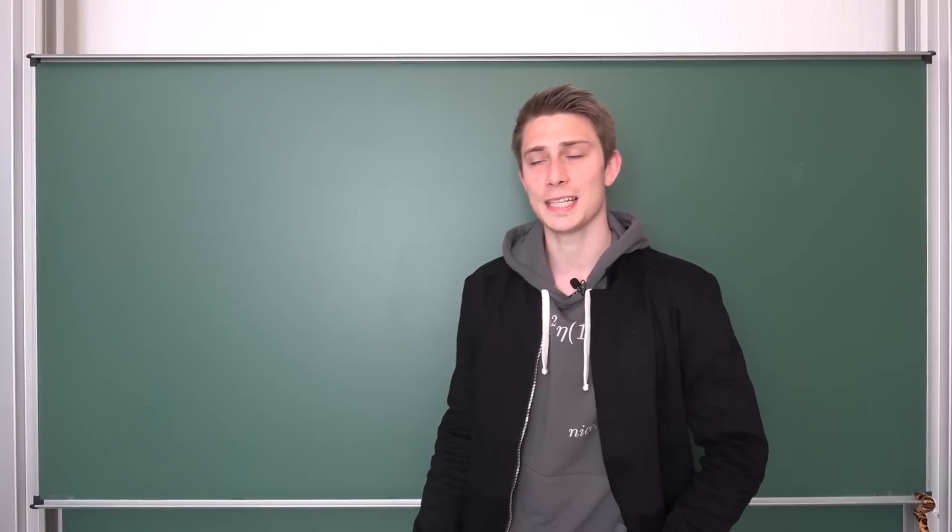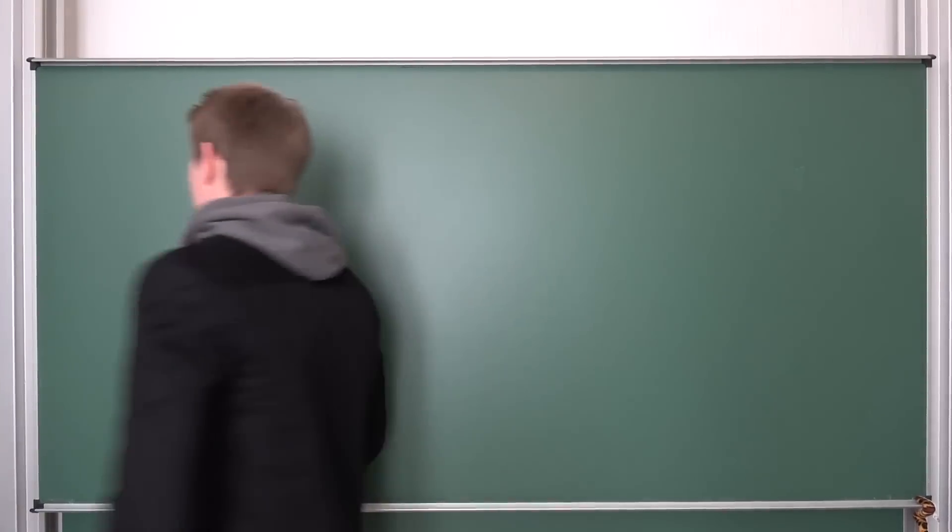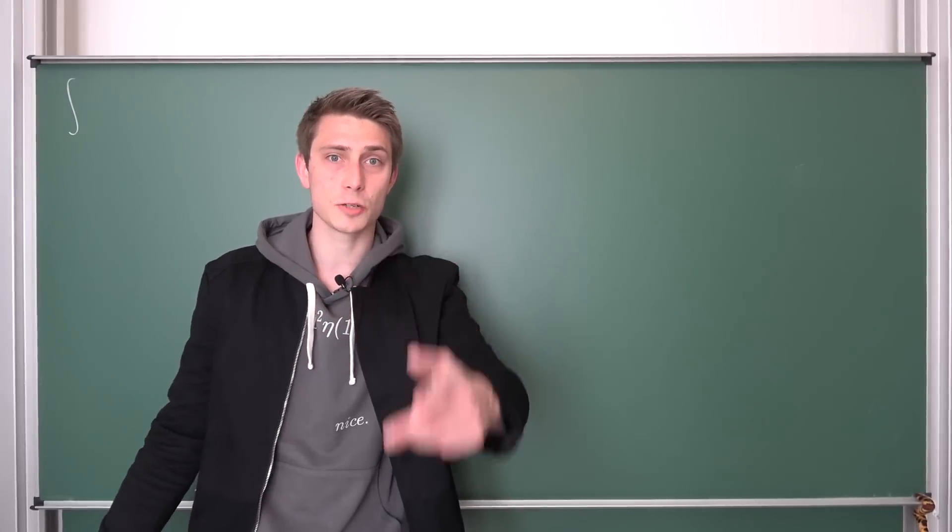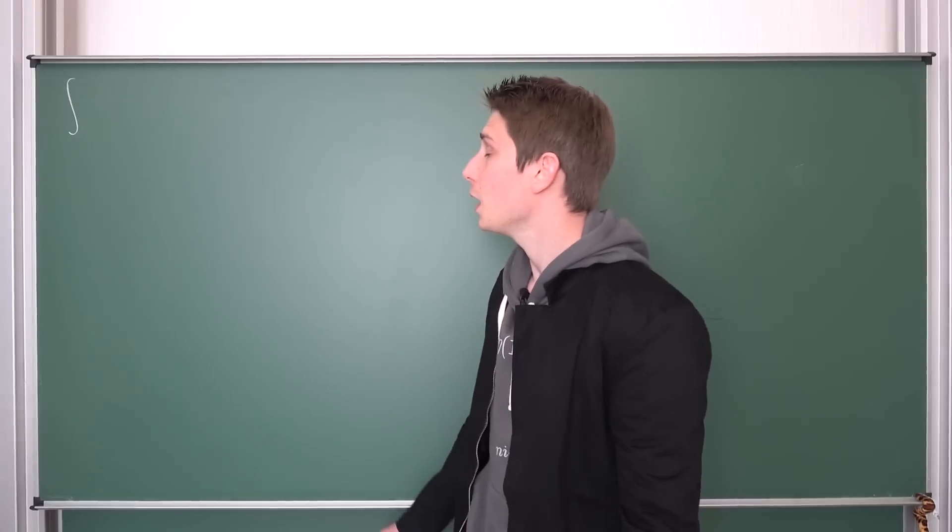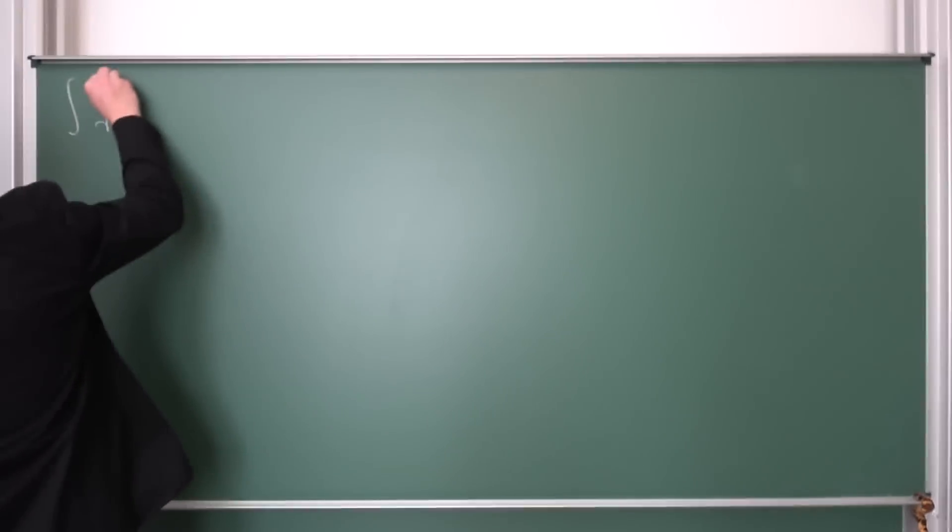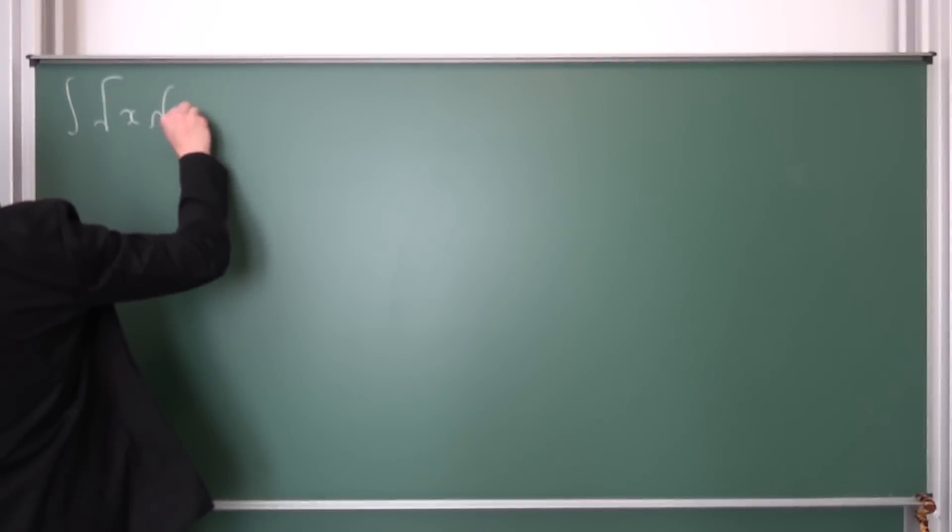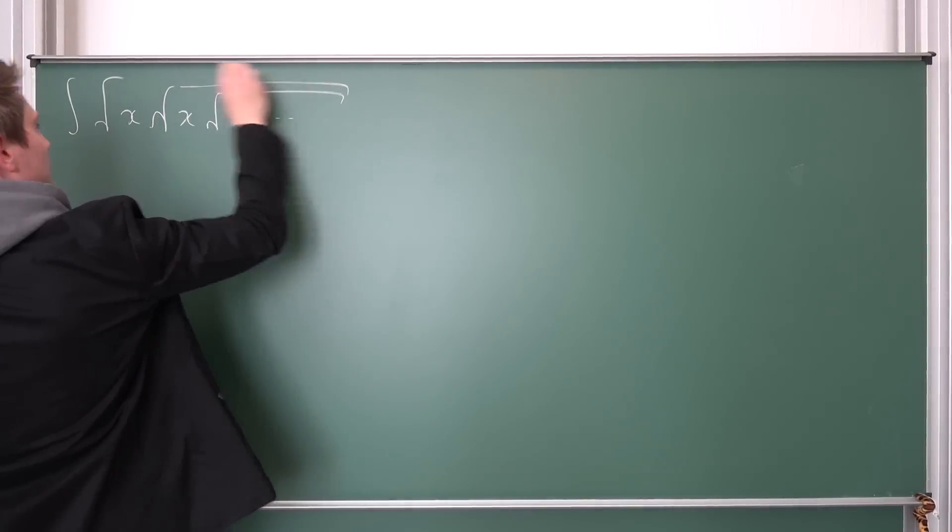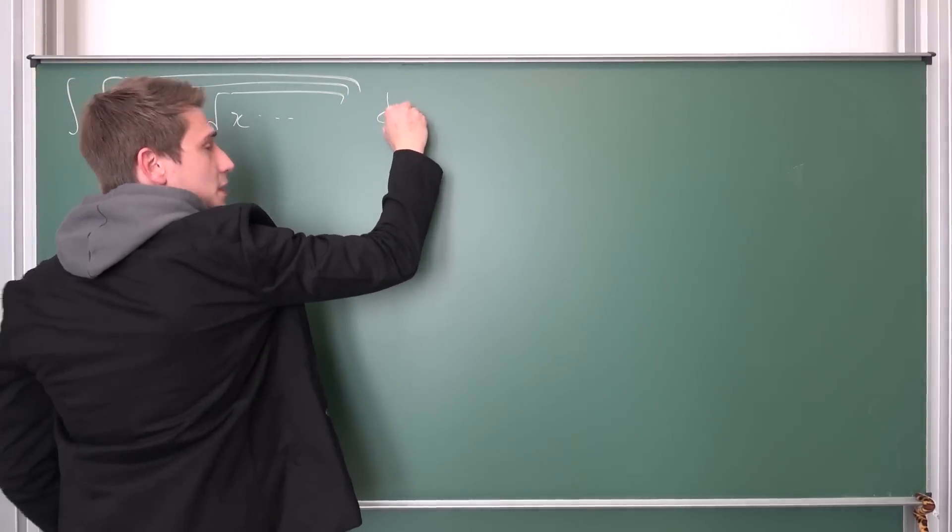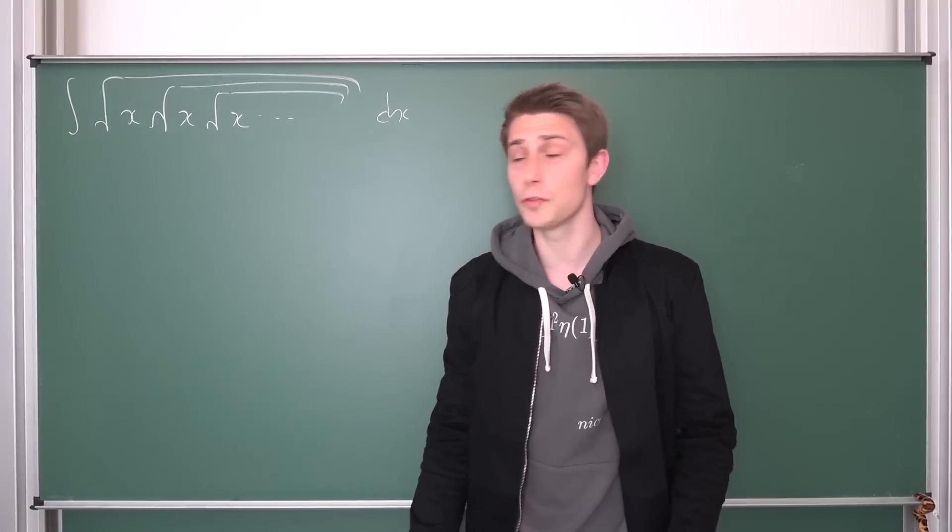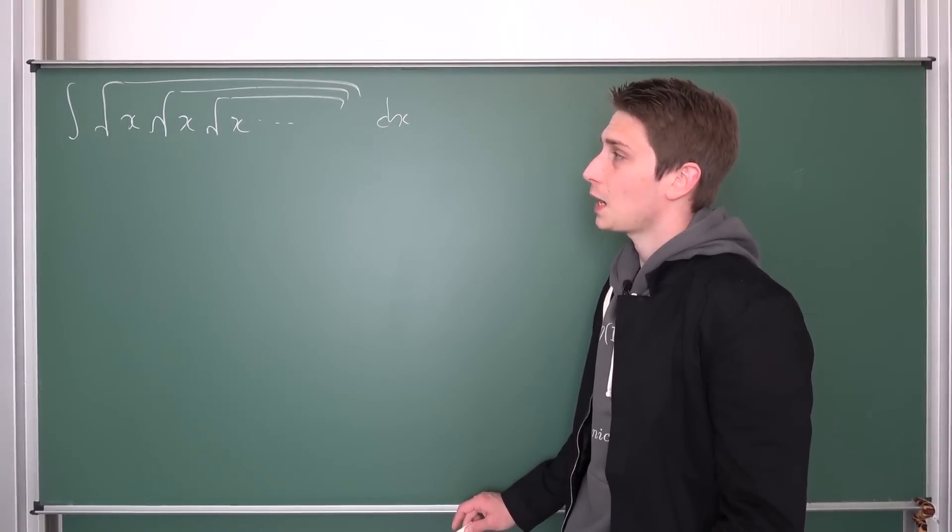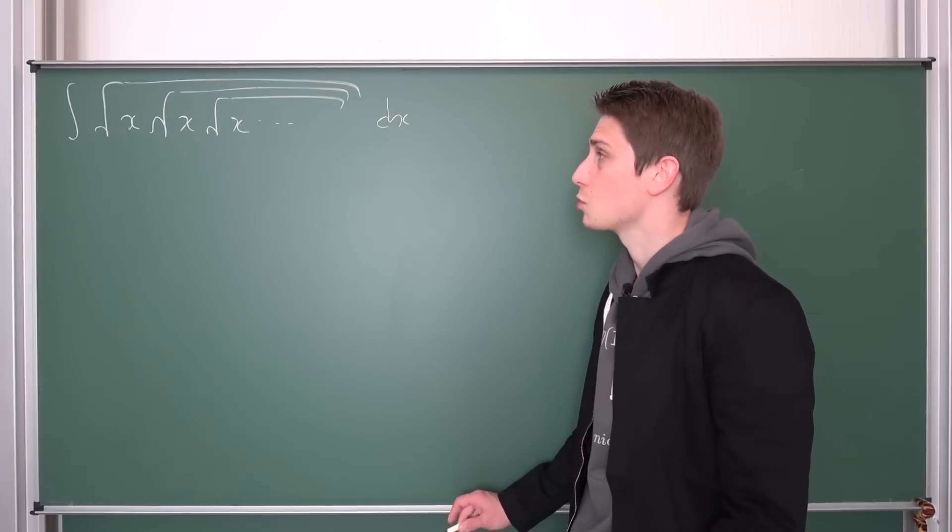It's an indefinite integral today. It's the one from nowhere to nowhere of the nested radical: square root of x, square root of x, square root of x, and so on up until infinity. Lots of square rooty boys here. It's a pretty root of four integral that we're dealing with here, and I already have a hunch how to solve this thing. We're just going to try it out.